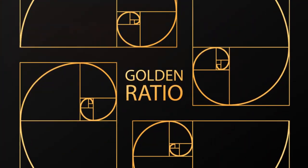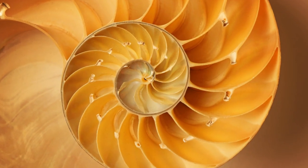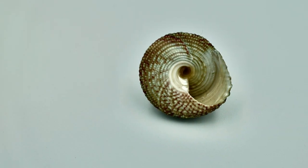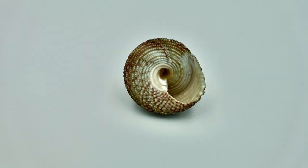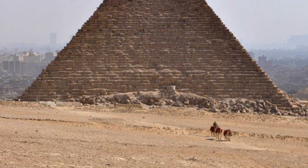For example, the golden ratio is another concept closely related to sacred geometry. This ratio, approximately 1.618, appears in nature, from the spirals of seashells to the arrangement of leaves on a stem.